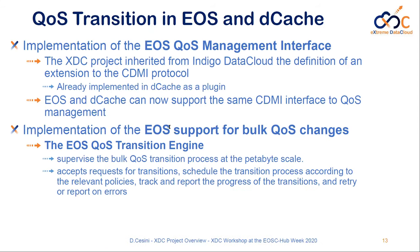On QoS transitions — in particular the QoS transition systems introduced into the EOS storage system, the storage system used at CERN. We added a new QoS management interface based on the CDMI protocol inherited from the Indigo Data Cloud project, and below this CDMI interface, the EOS team added support for bulk QoS changes. One limitation of the CDMI protocol is that the transition can be done only one file at a time, so a big effort was made to support bulk QoS transition — a transition engine was developed and included into the EOS system.